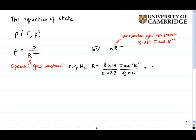This is equal to, for nitrogen, 297 joules per kilogram per Kelvin. For air, it's around 287 joules per kilogram per Kelvin.